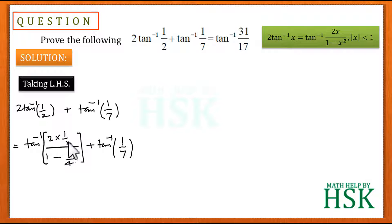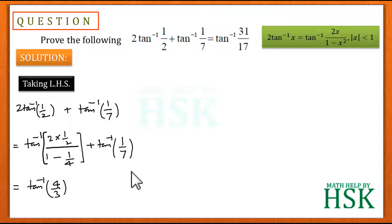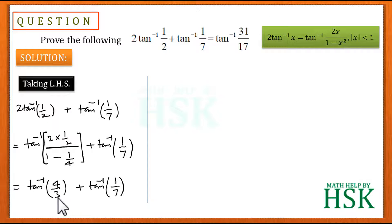The denominator 1 − 1/4 equals 3/4, so 2·tan⁻¹(1/2) simplifies to tan⁻¹(4/3). That calculation should not be a problem. So we now have tan⁻¹(4/3) + tan⁻¹(1/7).